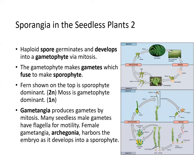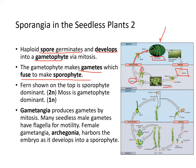In sporangia of seedless plants, haploid spores germinate and develop into the gametophyte. The gametophyte makes gametes that fuse to produce a sporophyte. The gametes fuse to become the zygote, which develops into the sporophyte. A fern is sporophyte dominant (2N), whereas moss is gametophyte dominant.